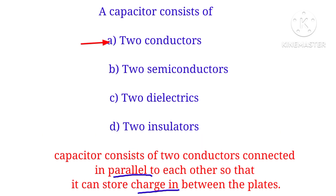What does a capacitor consist of? A capacitor consists of two conductors connected parallel to each other, so that it can store charge between the plates, separated by a dielectric material.